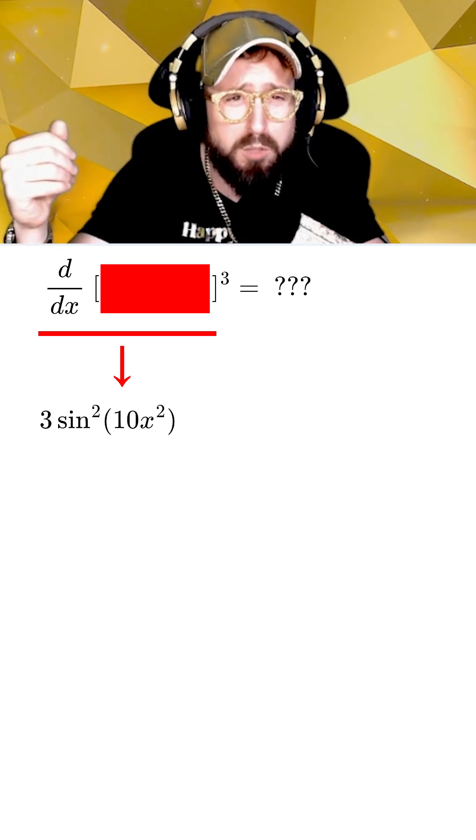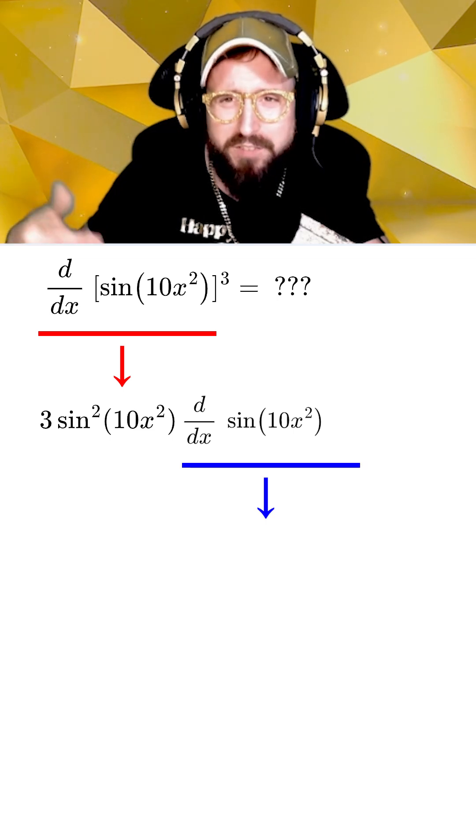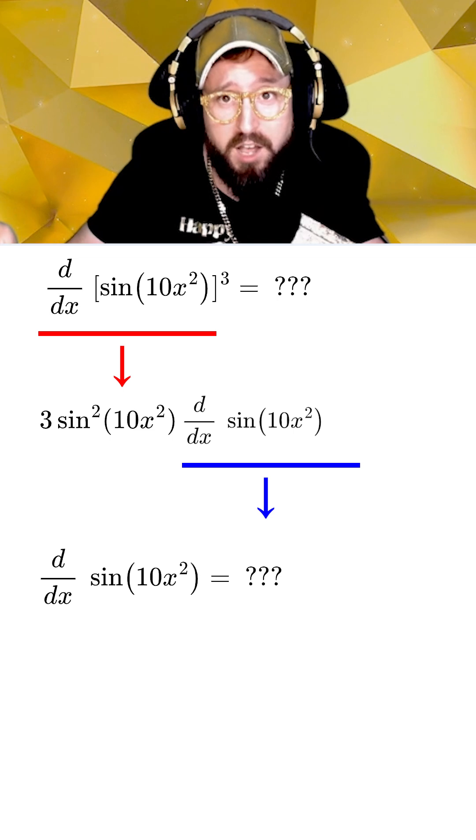But don't forget, we still need to multiply by what the derivative of inside the box was. In this case, taking the derivative of inside the box isn't so simple, as I also don't know how to do the derivative of sine of 10x squared.